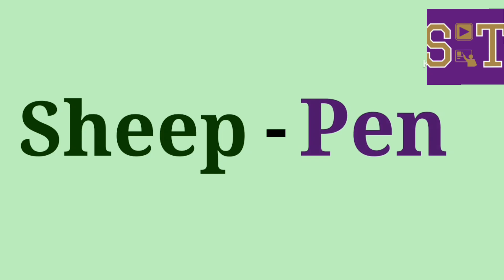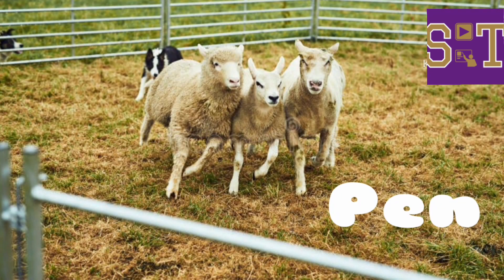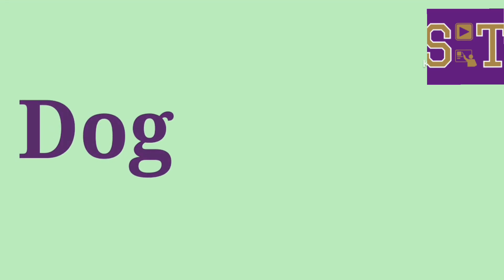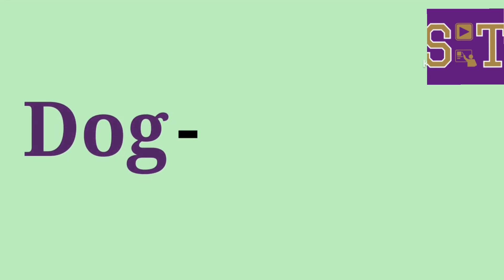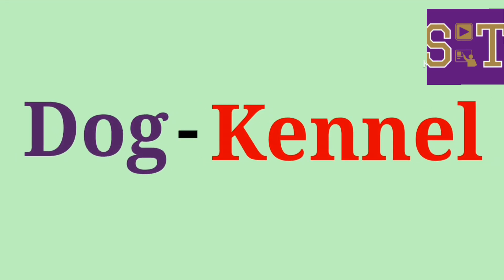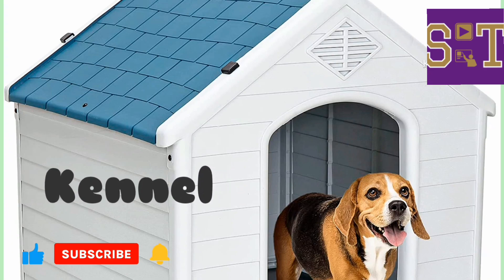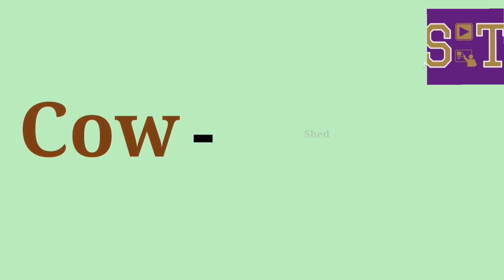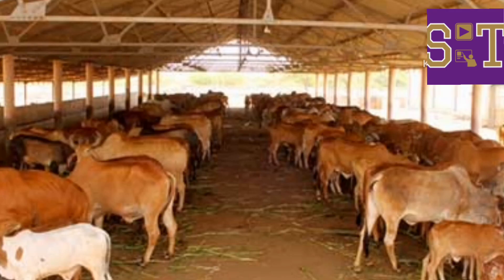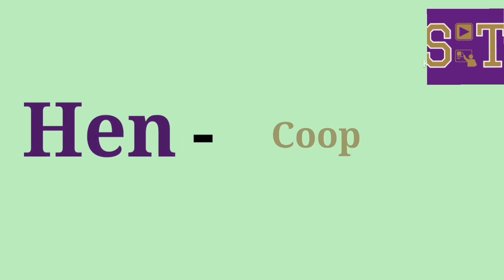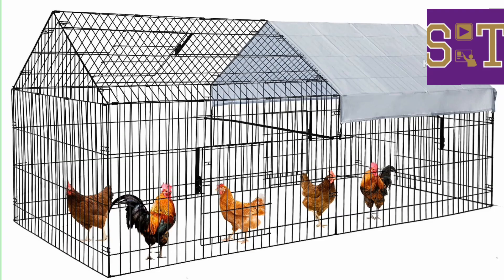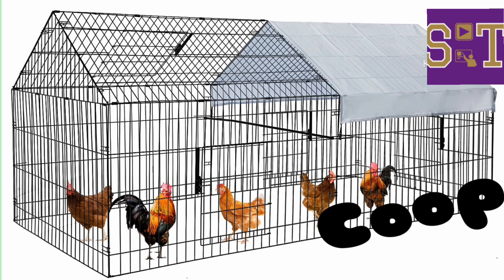Sheep — pen. A sheep lives in a pen. Dog — kennel. A dog lives in a kennel. Cow — shed. A cow lives in a shed. Hen — coop. A hen lives in a coop.